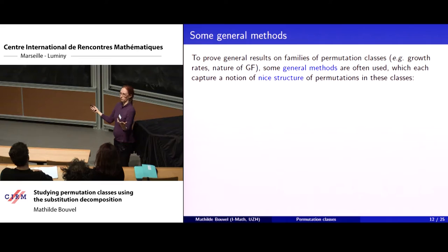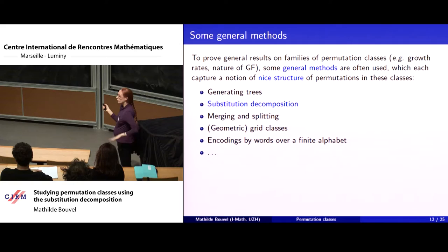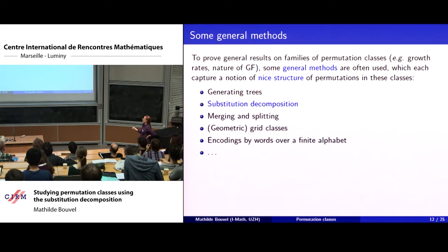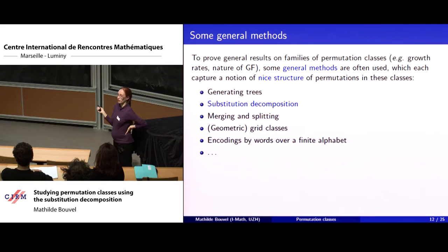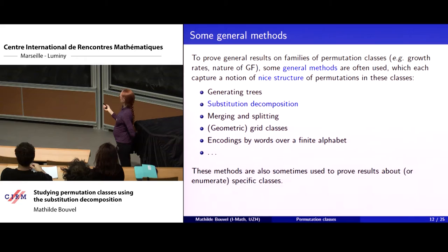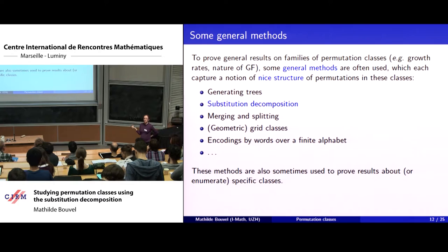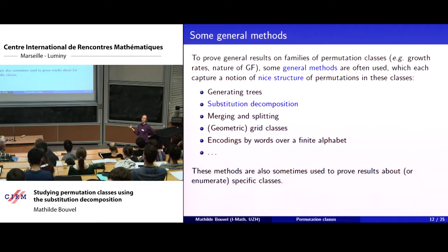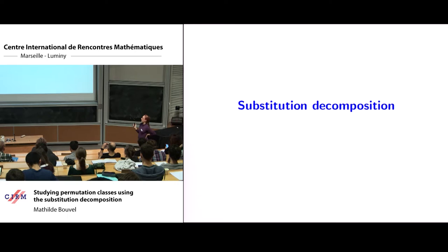Whenever you want to prove results that apply to many classes — like growth rates or nature of generating functions — you need generic tools to handle generic permutation classes. Several general methods exist: generating trees from the 1990s, and more recently substitution decomposition, among others. For learning more, Vince Vatter's survey in the Handbook of Enumerative Combinatorics edited by Miklós Bóna is a very good reading. These methods are used not only for general results but also for enumerating specific classes, including the Schubert variety example I mentioned.